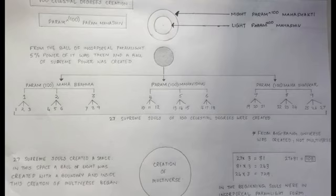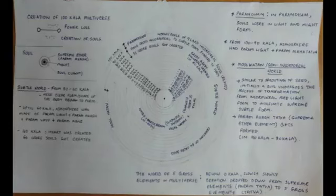These 9 souls each created 3 souls and total comes up to 27 souls. Up till the creation of 27 souls, all the souls were in the incorporeal form. These 27 souls which had 100 kala created a space which had a boundary and inside the space the multiverse and creation of souls took place. The 27 souls created 3 souls each. In total they were 81 souls created.